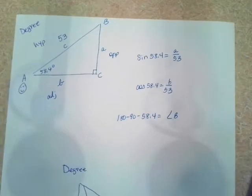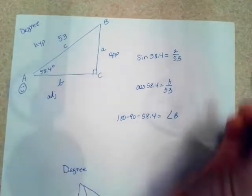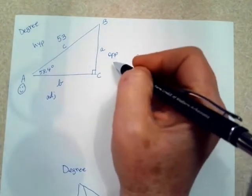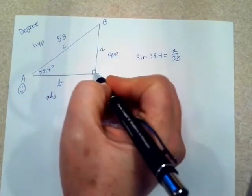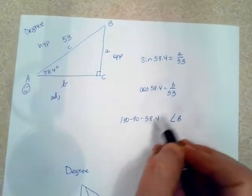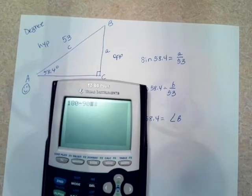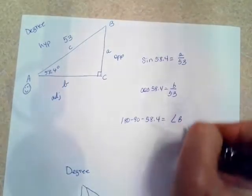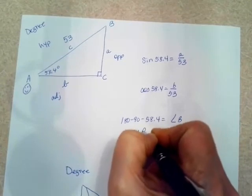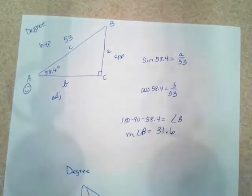Okay, they ask you to fill out the rest of the, or find the missing parts of the triangle. So this is 58.4. This is 90. So obviously I can subtract to find the other angle, 180 minus 90 minus 58.4. It's going to give me 31.6. So the measure of angle B is 31.6.